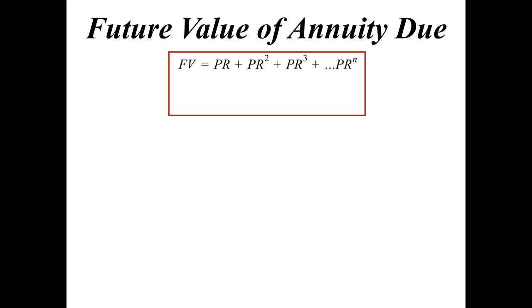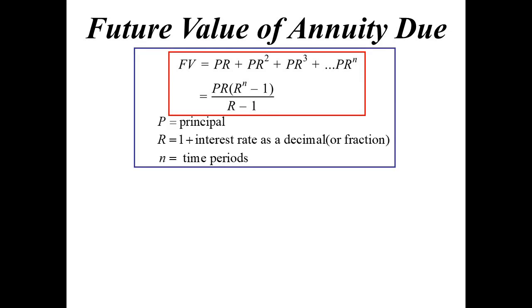So how do we work out the future value of an annuity due? The future value is the sum we've been talking about — what it's going to be worth at the end. We can create a formula: it's just the sum to N terms. That gives us FV = PR(R^N − 1)/(R − 1), where P is the principal, R is one plus the interest rate, and N is the number of time periods.